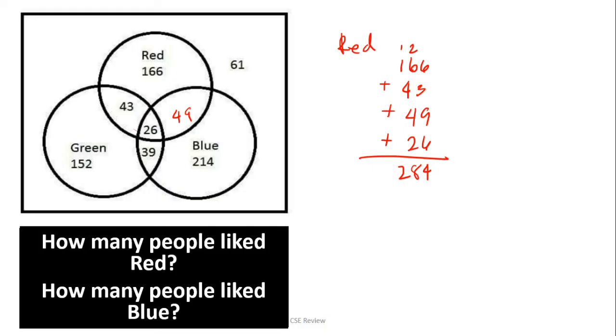Next question: How many people like blue? So the people who like blue are everyone in the circle labeled blue, including those who like other things. So blue is 214 plus 26 plus 39 plus 49. When you add that, this gives us 328. So how many people like red? That is 284. How many people like blue? That is 328.